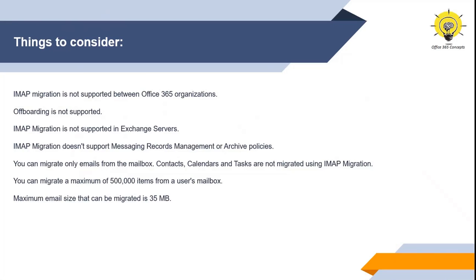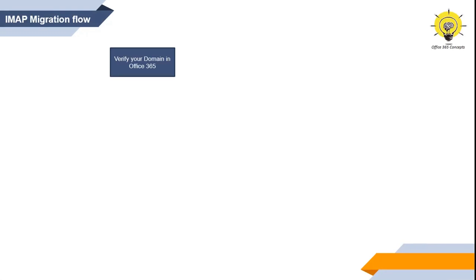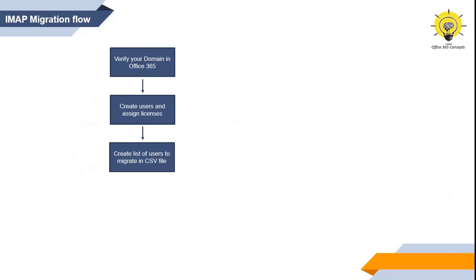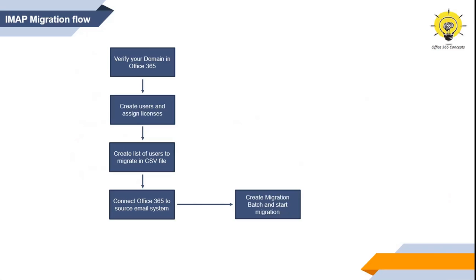Now let's understand how IMAP migration works and what steps are involved. If you have recently signed up for an Office 365 tenant, you need to verify your domain that you will be using for email addresses. After that, you will create users in Office 365 and assign licenses to these users. Then you will create a CSV file and add all the users you want to migrate from the source email system to Office 365. Once you have the CSV file, you will create a migration endpoint so that Office 365 can connect with the source email system. Then you will create a migration batch and start the migration.